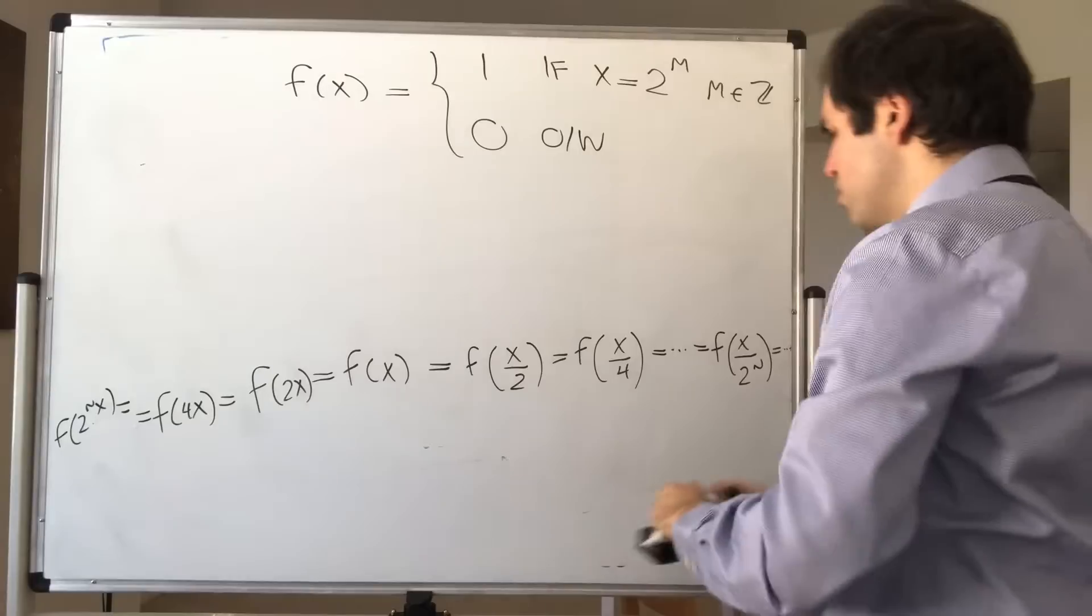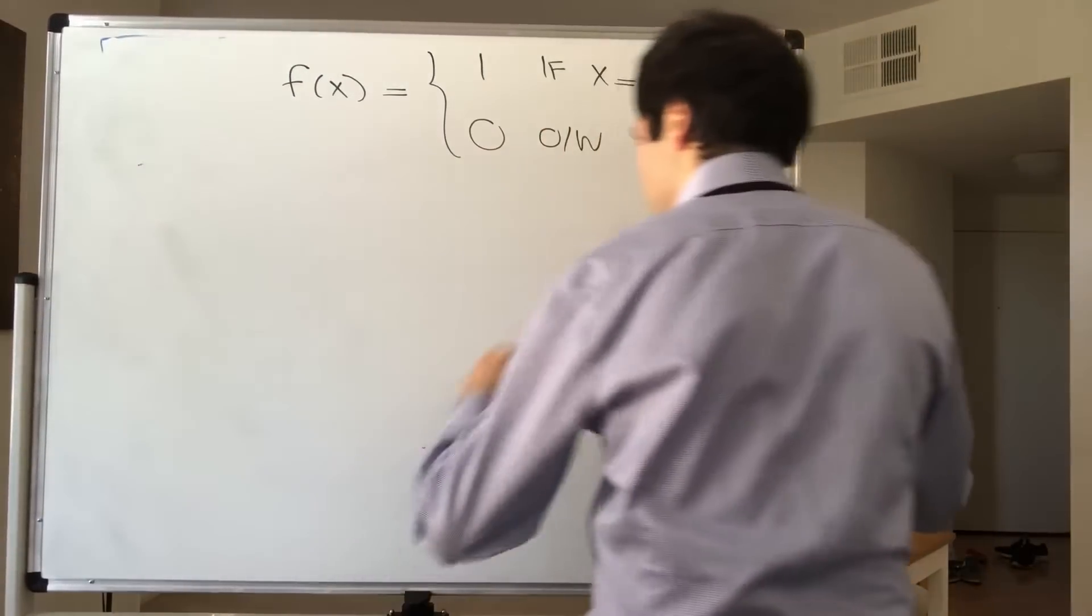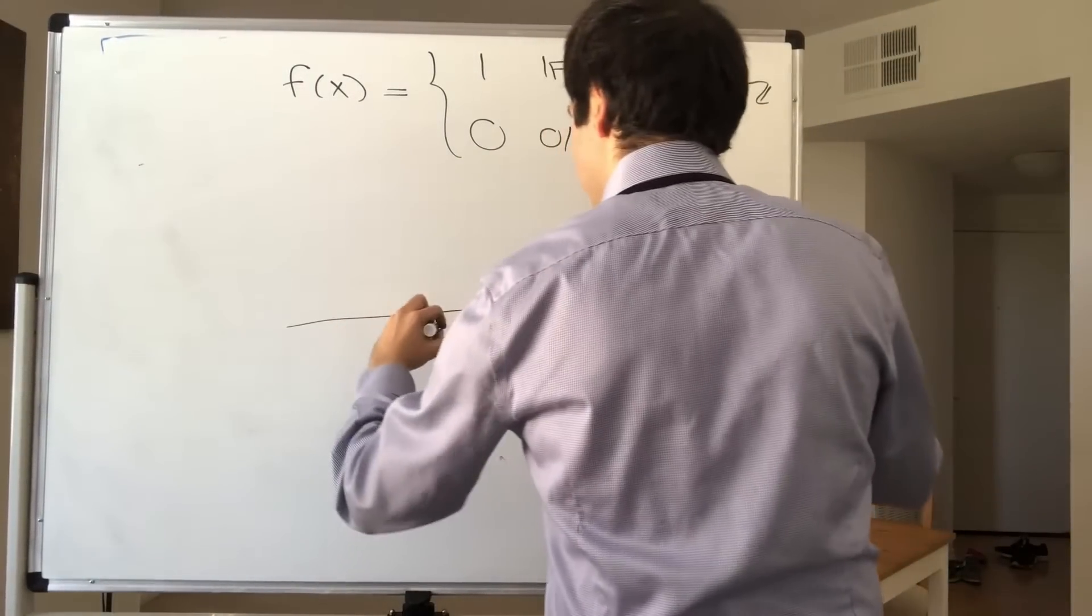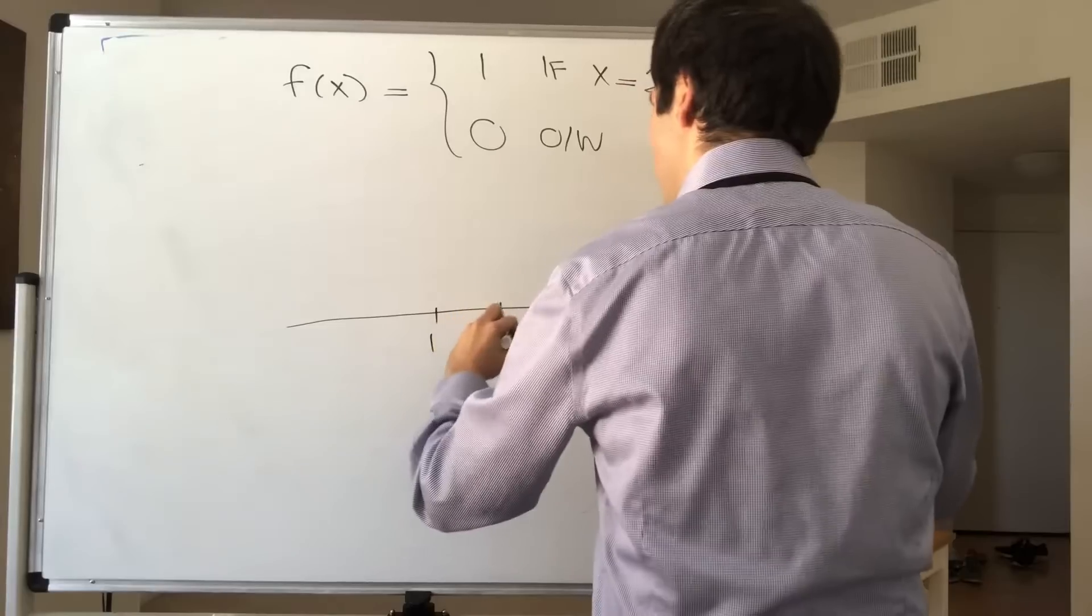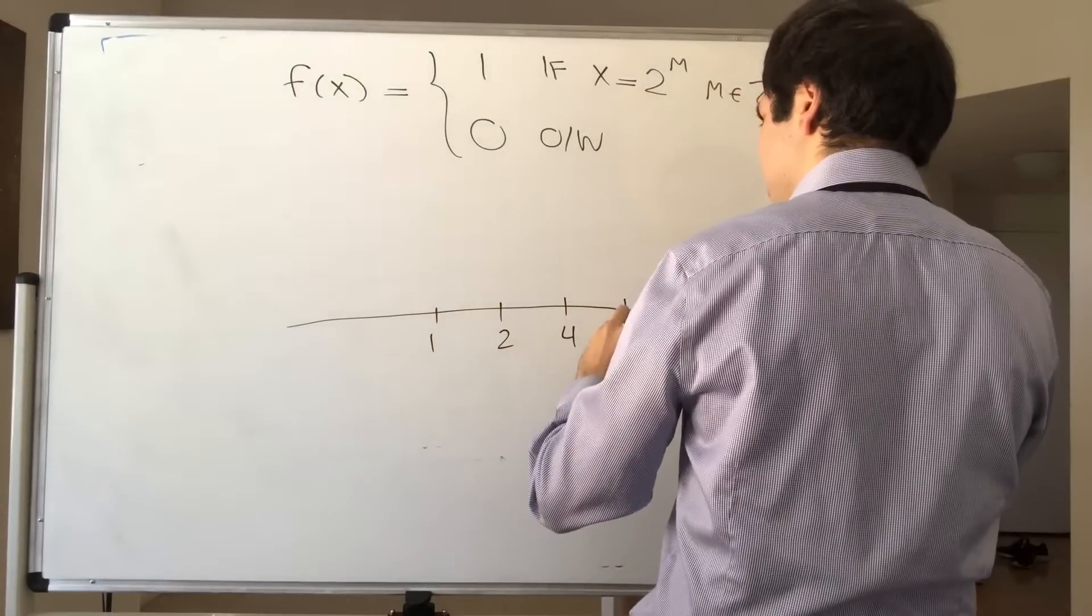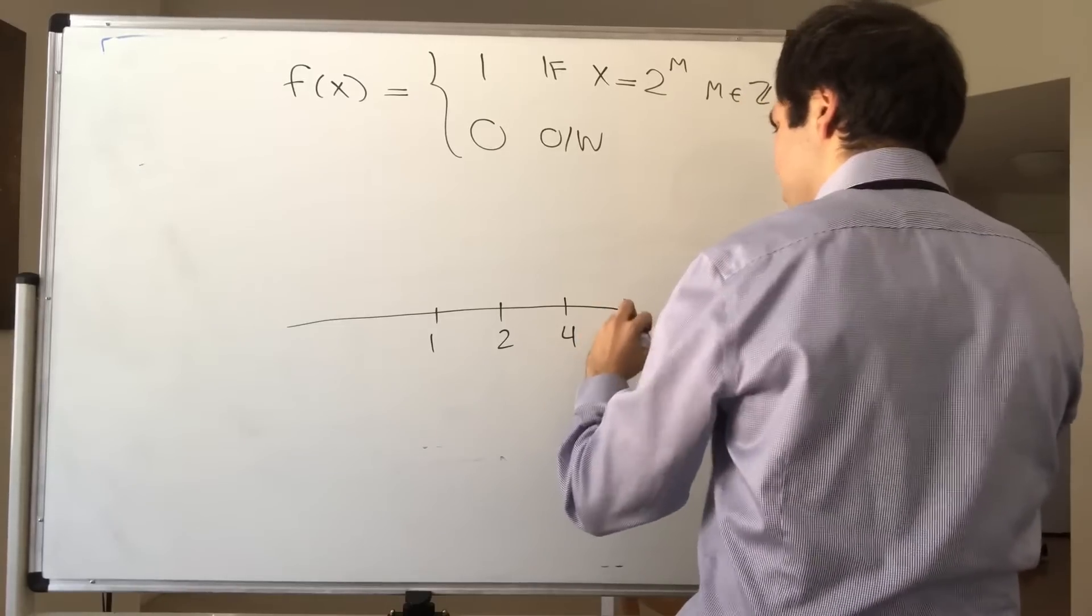So, what this looks like would be, you start, let's say, with 1, and then 2, and then 4, and then 8, and so on.